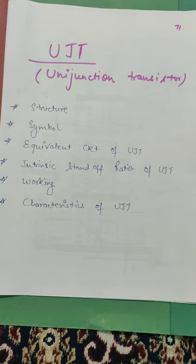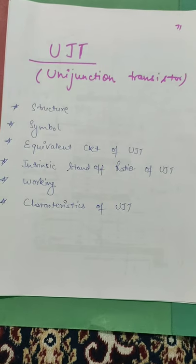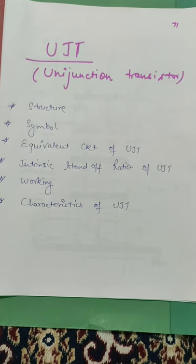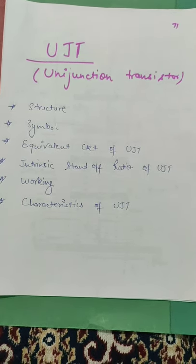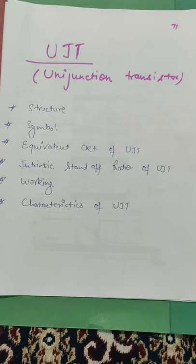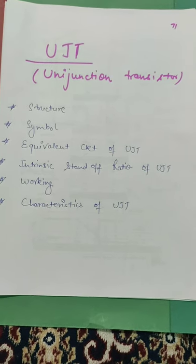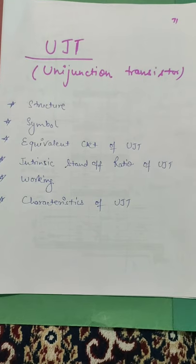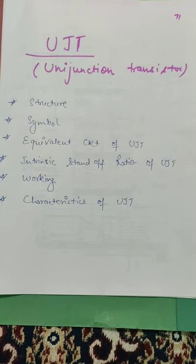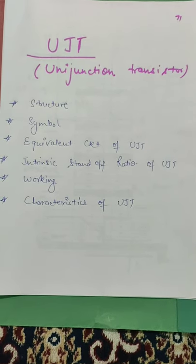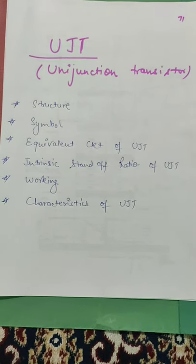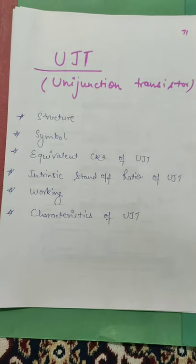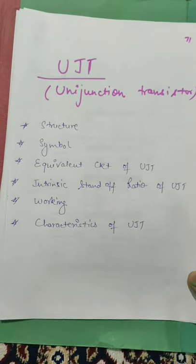Basically, by the name we can explain: unijunction — it has a single junction. This is my session outline: Structure, symbol, equivalent circuit of UJT, intrinsic standoff ratio of UJT, working and characteristics of UJT.